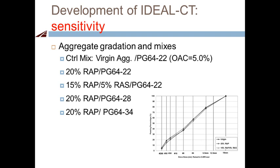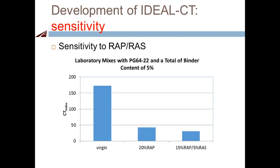The sensitivity results show that the virgin mix CT Index is around 175. Adding 20% RAP drops it below 50. Using 15% RAP with 5% shingles reduces it further. So the ideal cracking test and CT Index are clearly sensitive to RAP and RAS — adding stiffer recycled materials results in a mix with less cracking resistance.